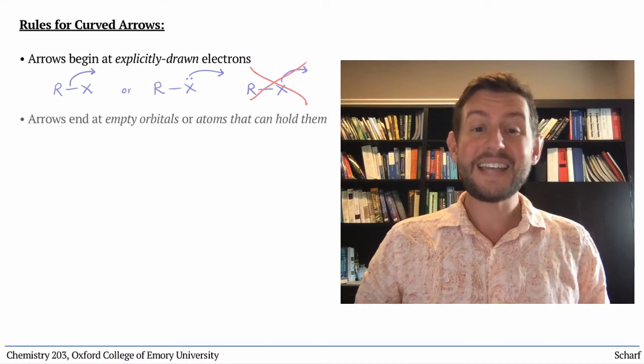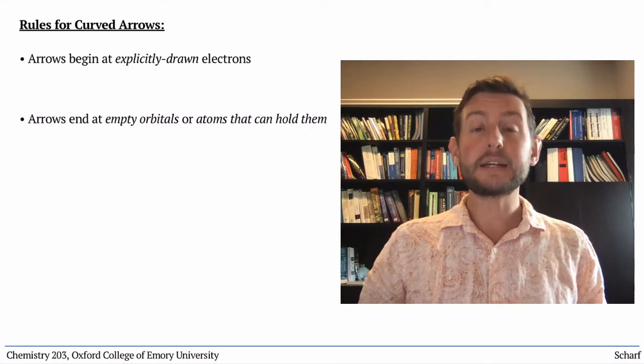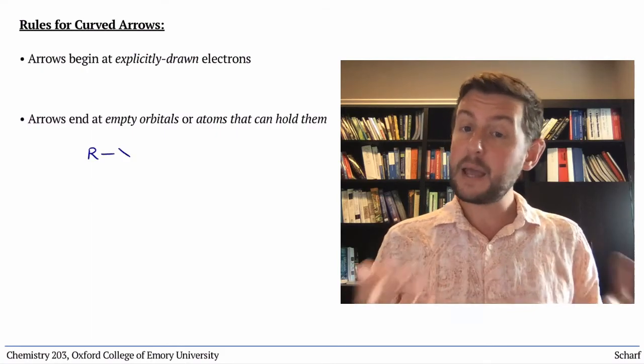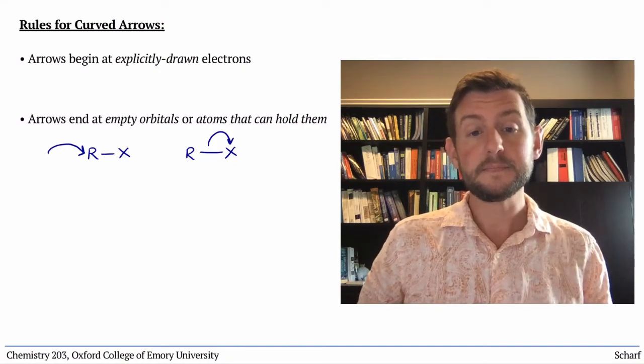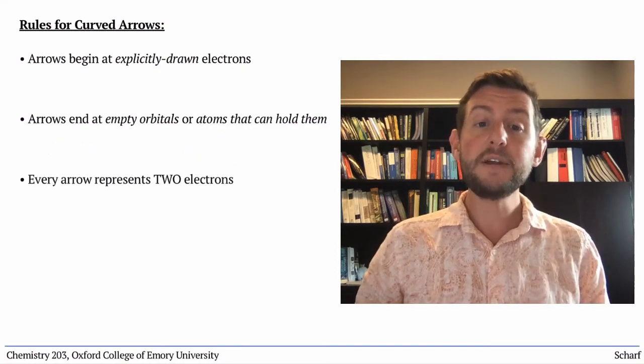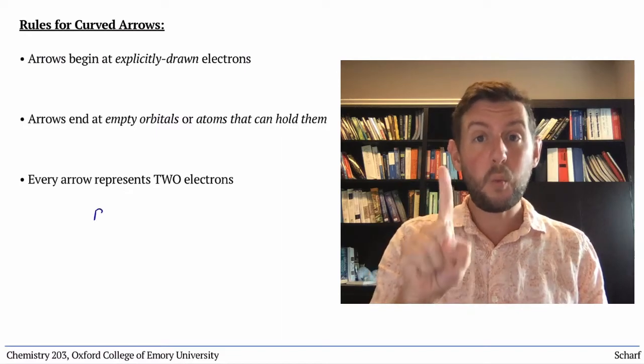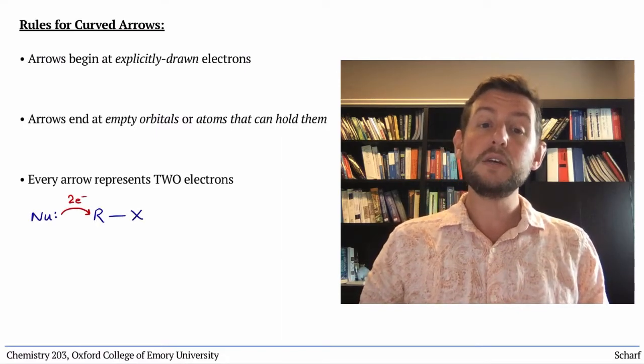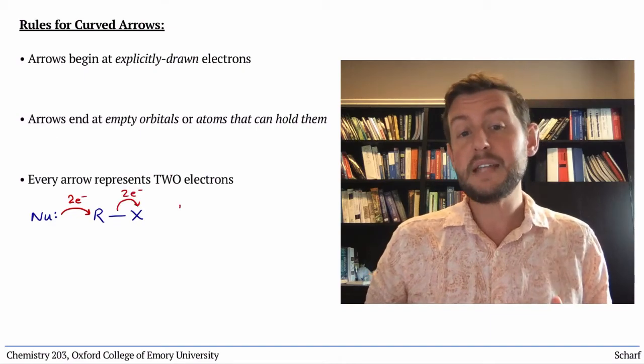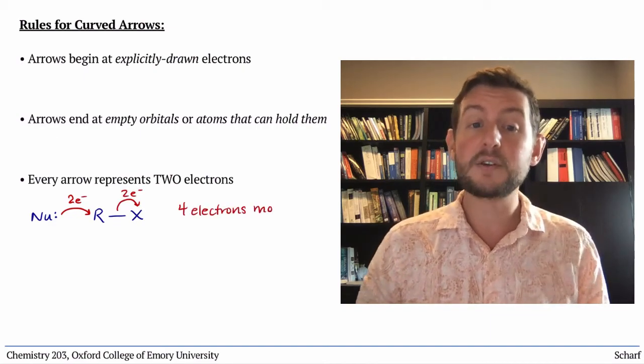Every arrow must end at a place where electrons can reside, either an empty orbital or an atom that can accommodate a new pair of electrons. Next, every arrow represents the motion of one pair of electrons, never more. This means that you can use the number of arrows in a step to show how many electrons are moving in that step.